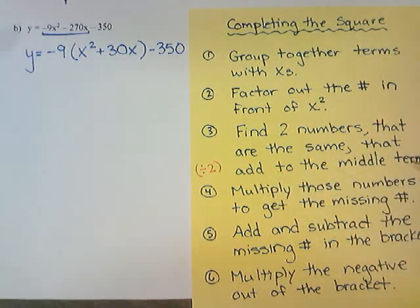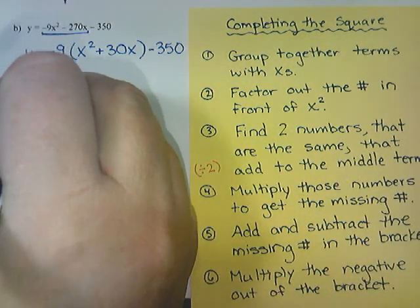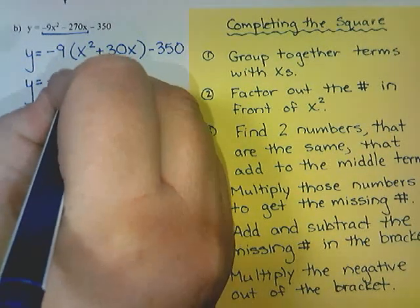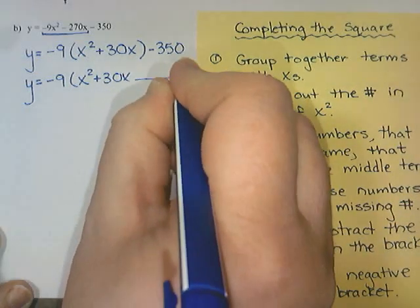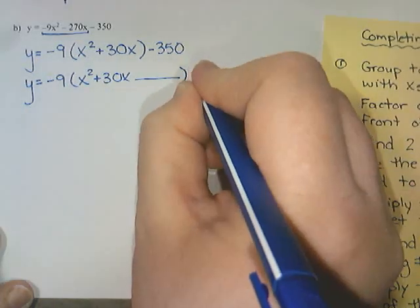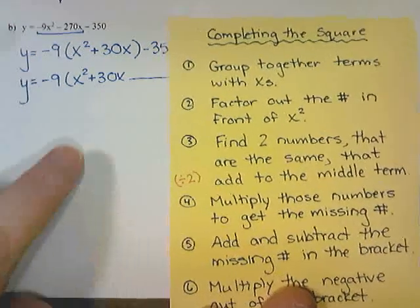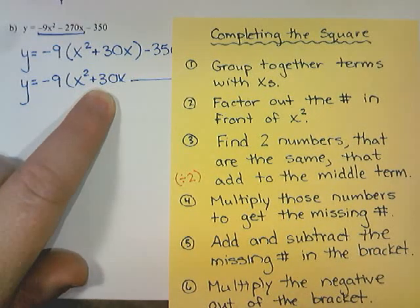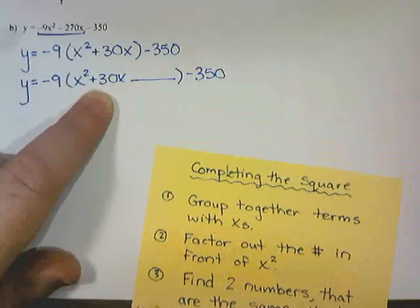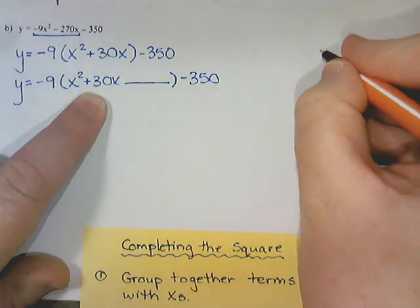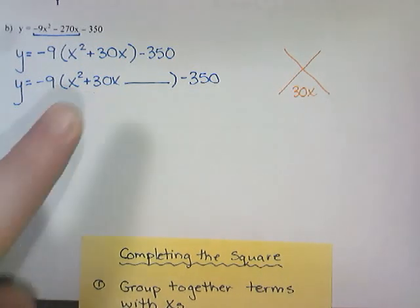Now we need to add to the middle term. Inside the bracket I currently have two terms but I'd like it to be three. I'd like to have x squared plus 30x and then there should be a number at the end. To find that number we're going to take our middle term of 30x and find two numbers that are exactly the same that add to 30x.